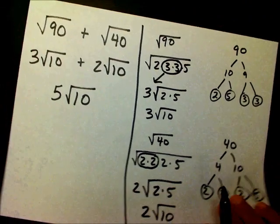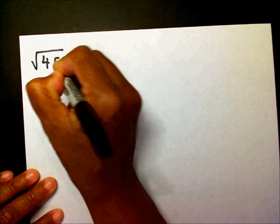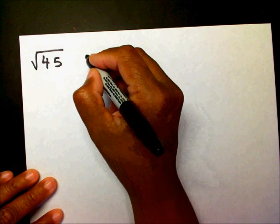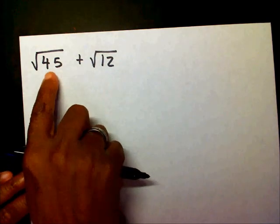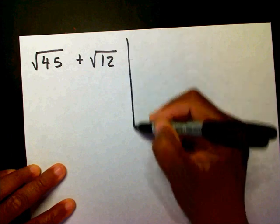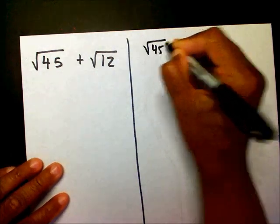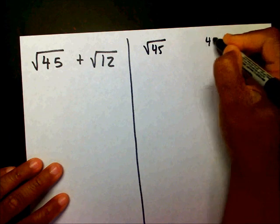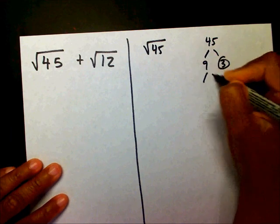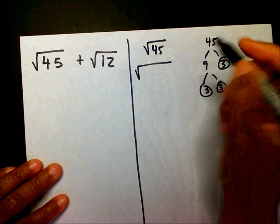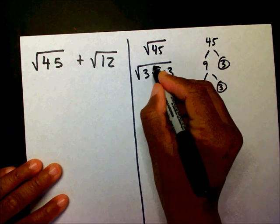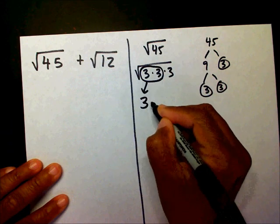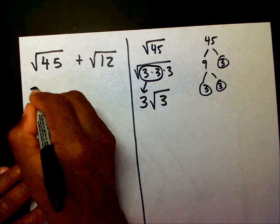Let's work one more: radical 45 plus radical 12. My radical 45 — I'm going to make a factor tree for 45. Underneath my radical I'll have 3 times 3 times 5. Three times 3 is 9, and the square root of 9 is 3. That goes outside the radical, and my 5 stays in. So I have 3 radical 5 plus.